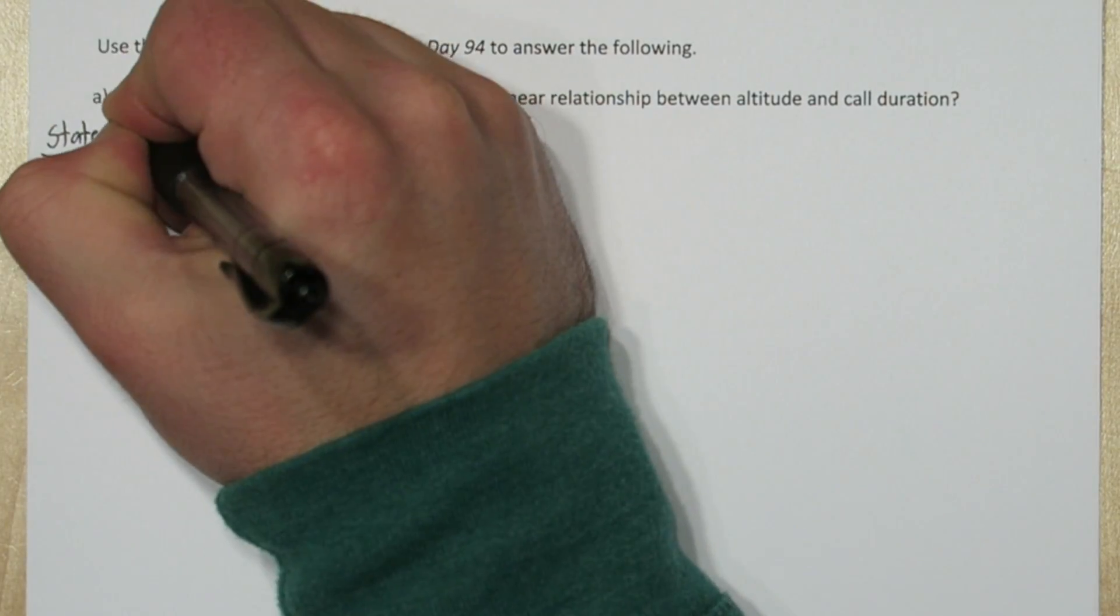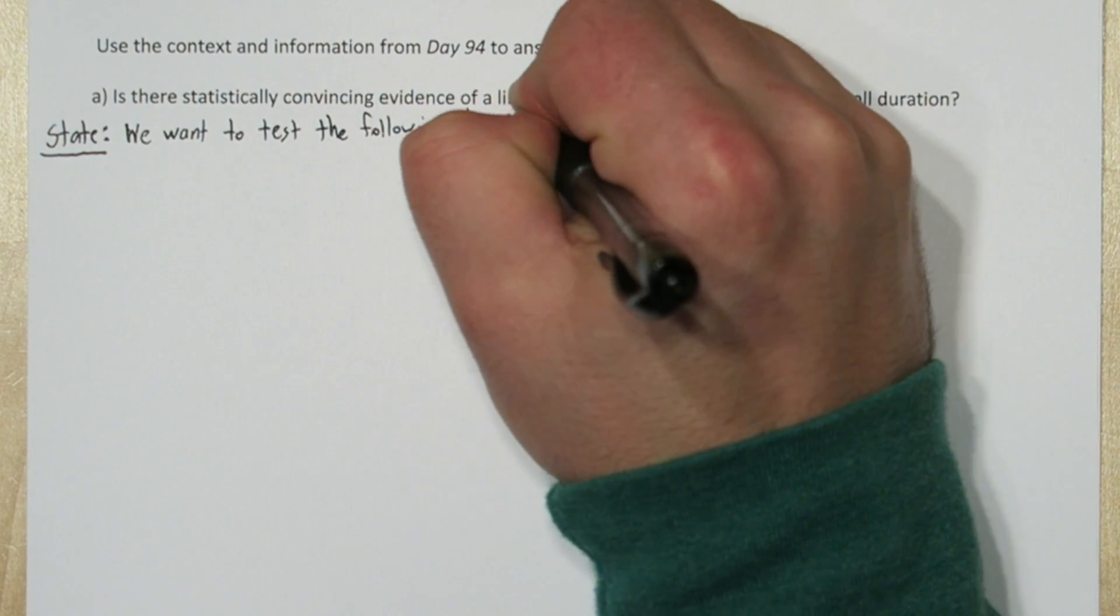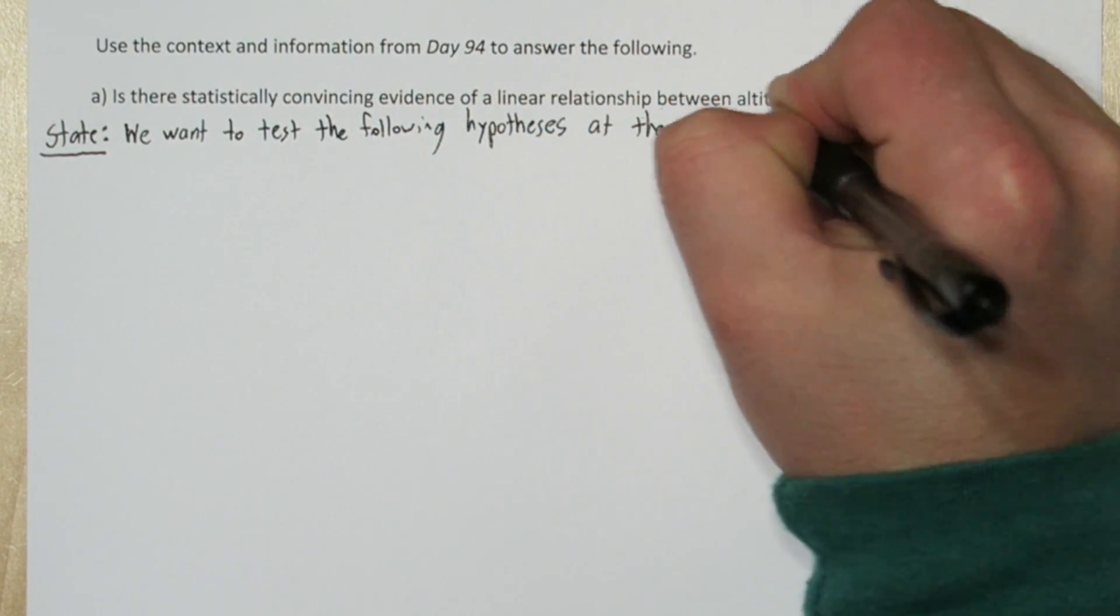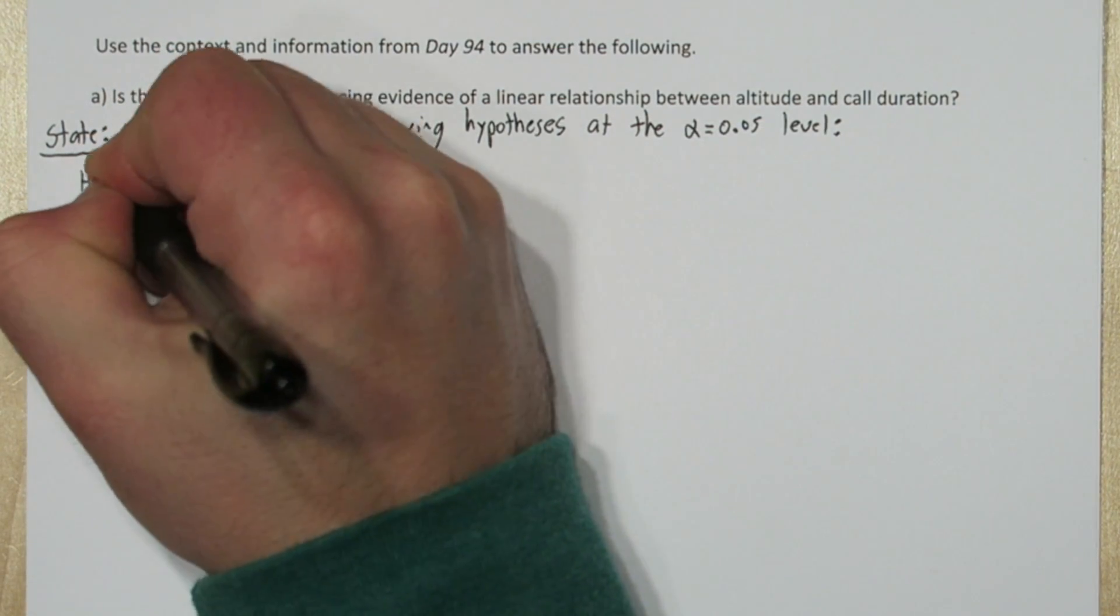Let's use the four-step solving process here. So for the state step, we want to test the following hypotheses at the alpha equals 0.05 level. Since another significance level wasn't given, we use 0.05 as our default.